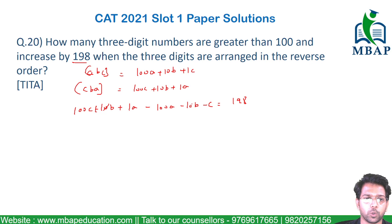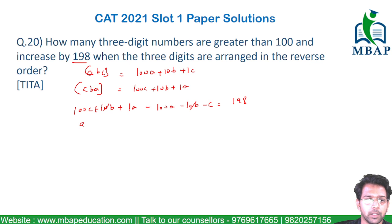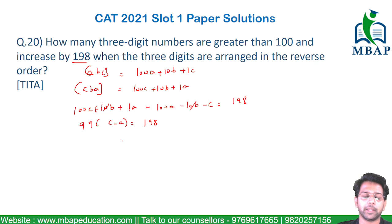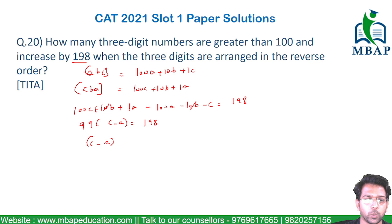The 10B terms cancel out, so you basically get 99(C minus A) equals 198, meaning C minus A equals 2. The middle value B will be common and doesn't affect this condition.